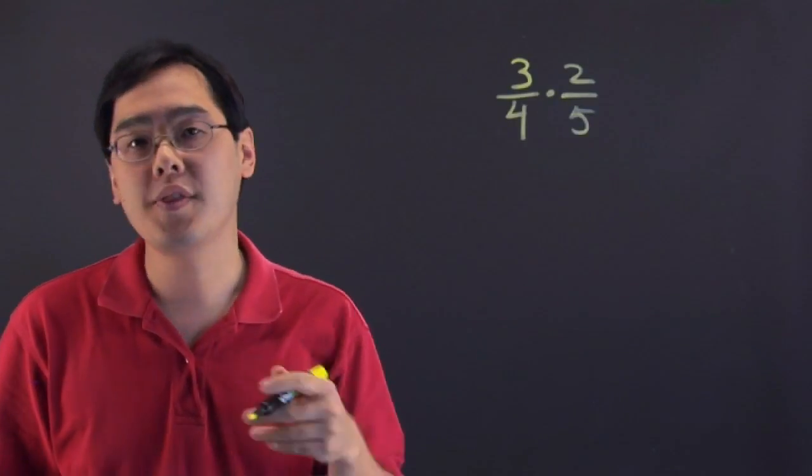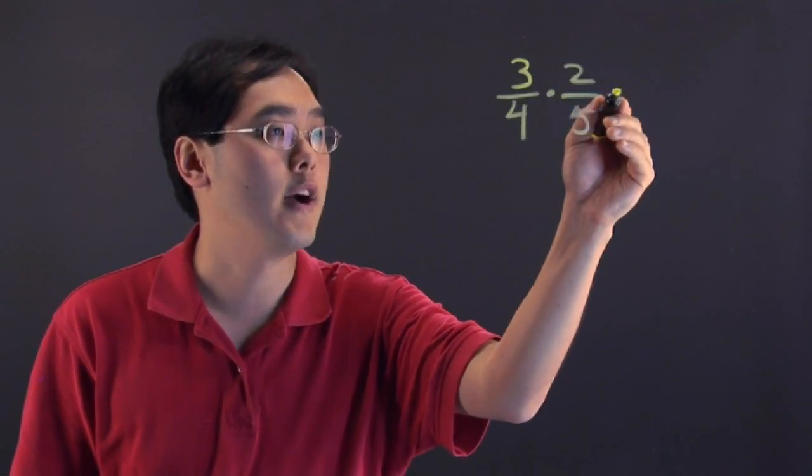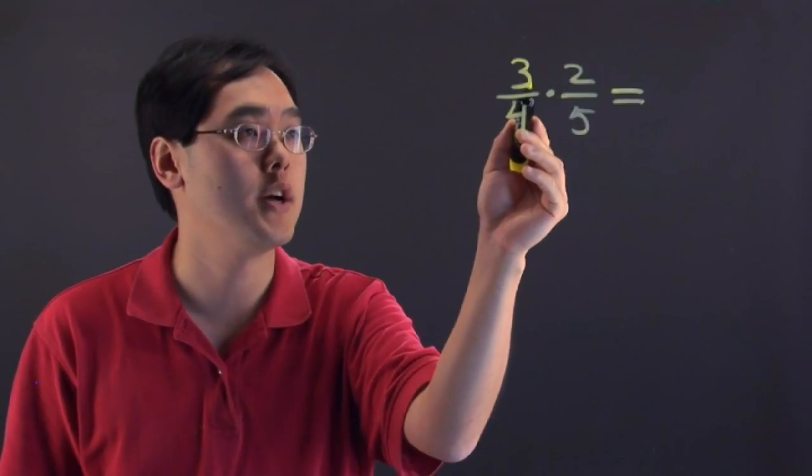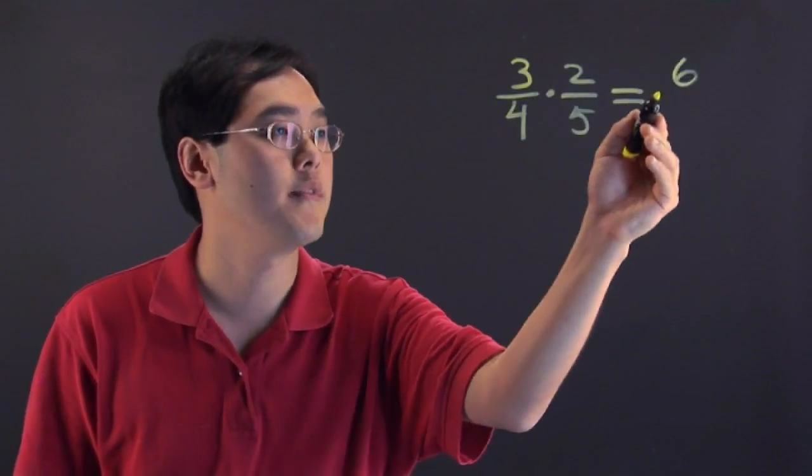Now one thing that you can do is you can multiply first and reduce later. So let's just go that route. Now as you know with multiplying fractions you need to multiply across. So 3 times 2 is 6 and then 4 times 5 is 20.